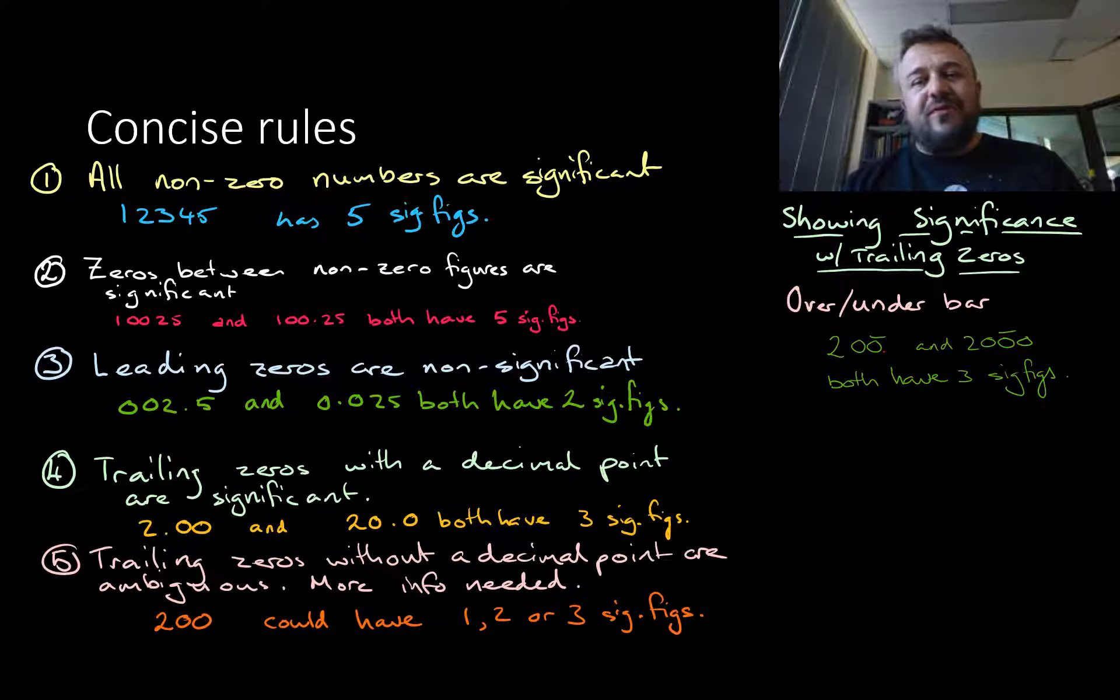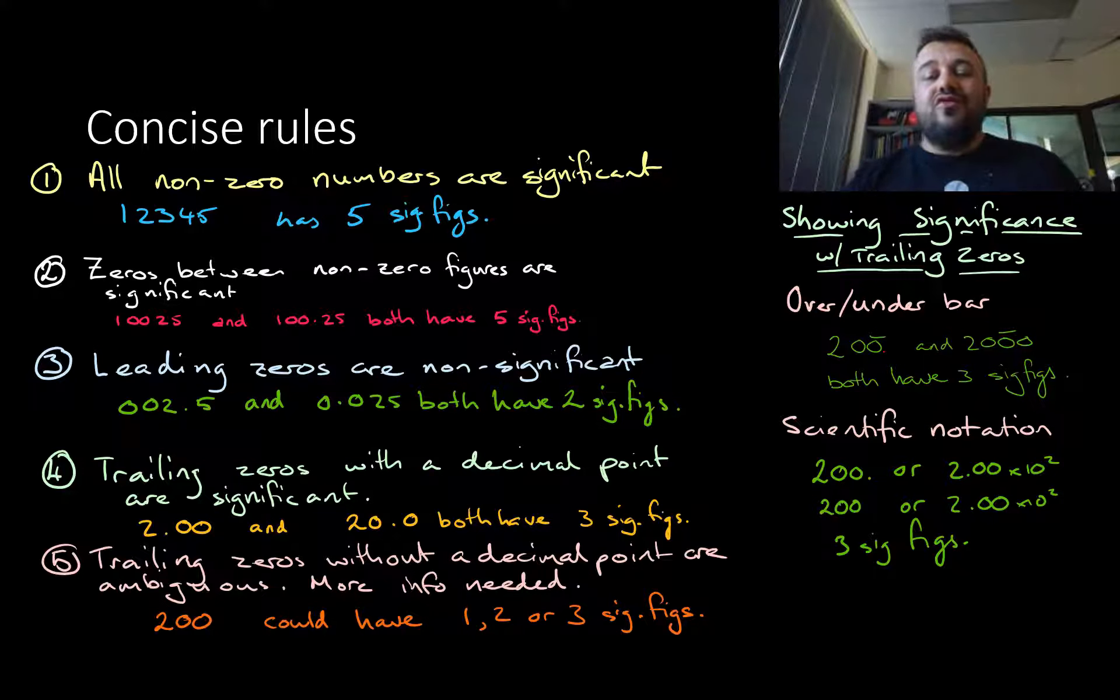The other way to do it is scientific notation. Scientific notation rocks. Love scientific notation. So 2.00 times 10 to the 2 have three significant figures. 200, if you don't have a decimal point and you know that it's measured to the nearest whole gram, like if it should have a bar above, another way to show it is 2.00 times 10 to the 2. This has three significant figures because you'll see that it follows a decimal place.